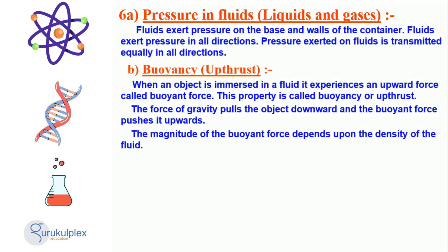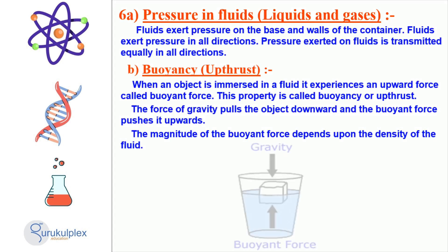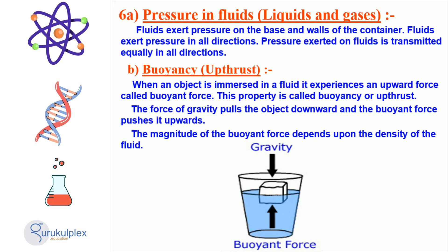Fluids possess great power and should not be underestimated. Pressure is transmitted evenly throughout liquids and gases across a container. This is linked to buoyancy or upthrust, which is the upward force an object experiences when submerged in a fluid. This buoyant force is determined by the density of the fluid, with greater density resulting in greater buoyancy. Gravity pulls the object downwards, while buoyancy pushes it upward, until a balance is reached which allows the object to float on the surface of the fluid.